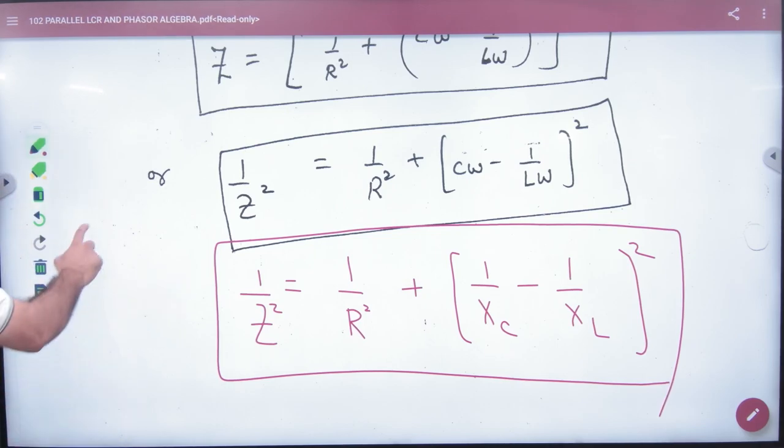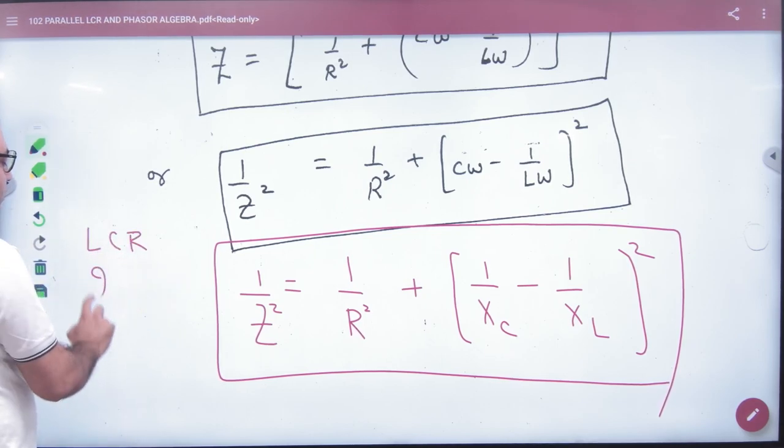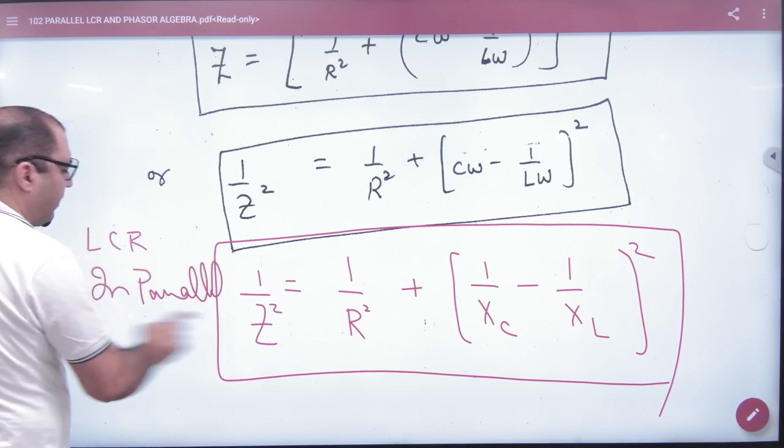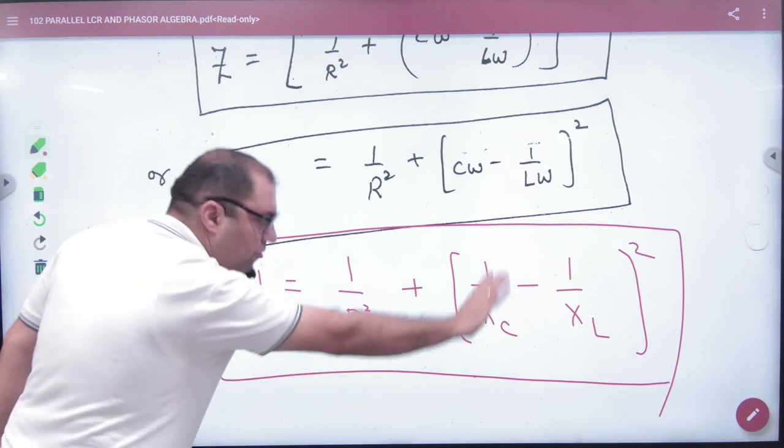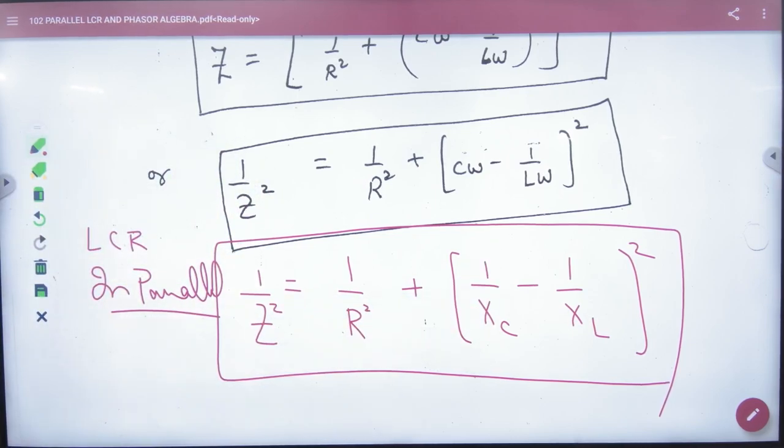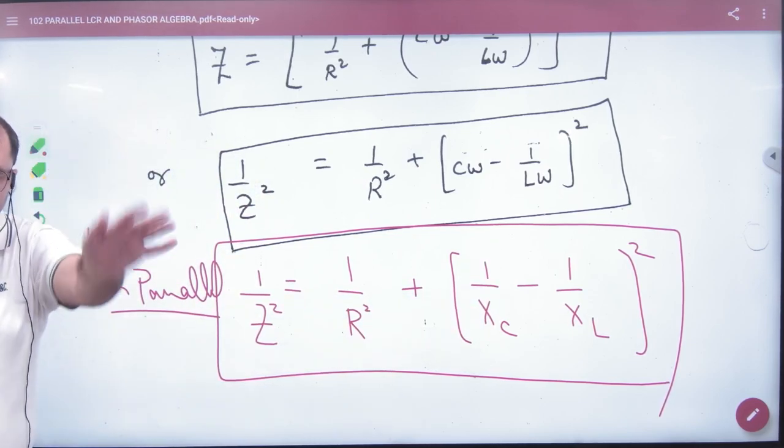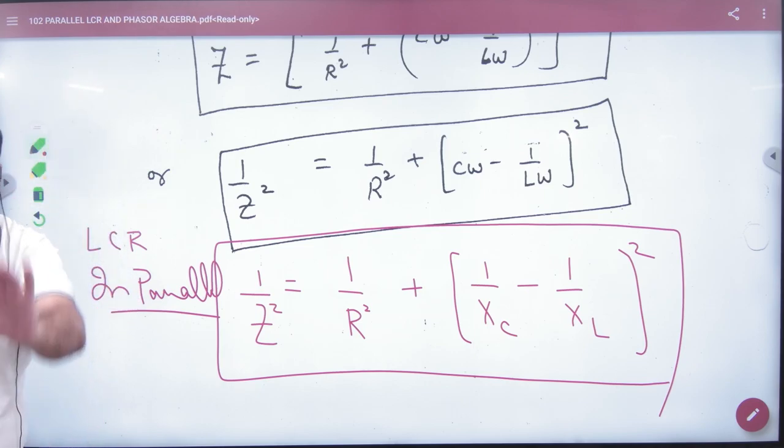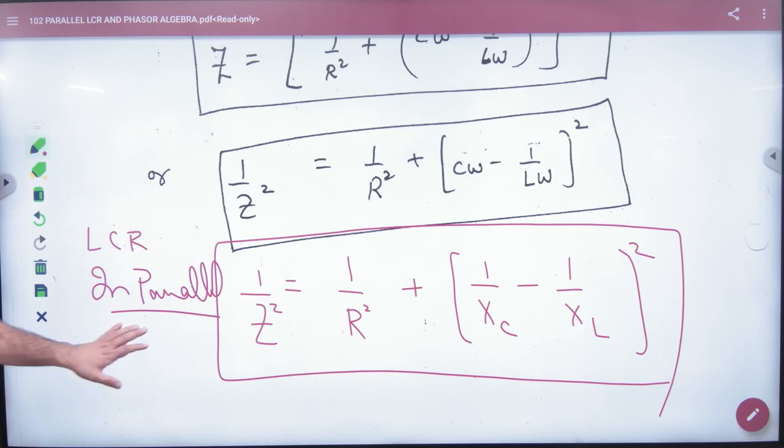Parallel combination: L, C, R in parallel. Use this formula for Z. Don't do theory. No, you need to have a theory - I gave an introduction and have to prove it, but you don't need it. You have to use this formula.